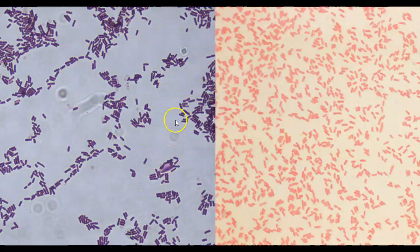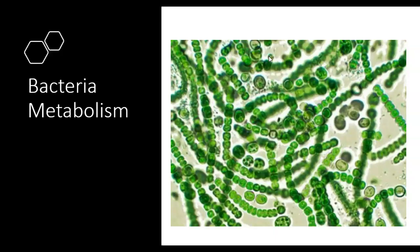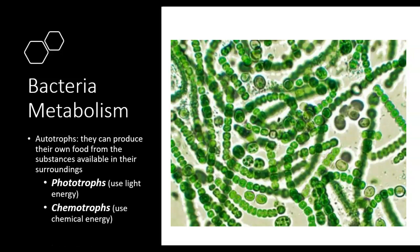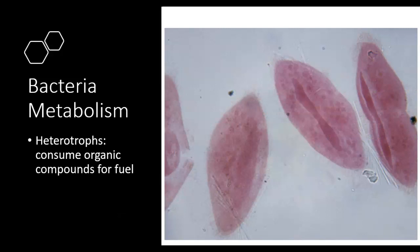Let's talk about the metabolism of bacteria. Bacteria can be autotrophs, meaning they use substances available in their environment to produce their own food. They can be photosynthetic — using light energy, kind of like plants — or they can use chemicals in their environment to produce food. Other bacteria are heterotrophs, meaning they need to consume organic compounds like sugars and carbohydrates to survive and reproduce. Most likely, the bacteria you'll be working with in lab are going to be heterotrophs.